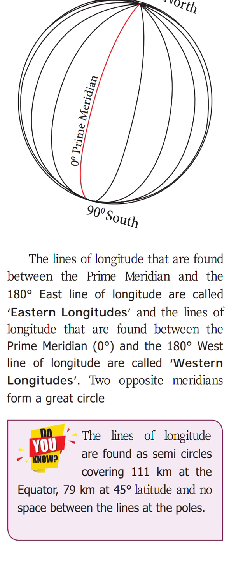Two opposite meridians form a great circle. One meridian on the west and one on the east — if you join them you will get a great circle. That is the summary about longitude.